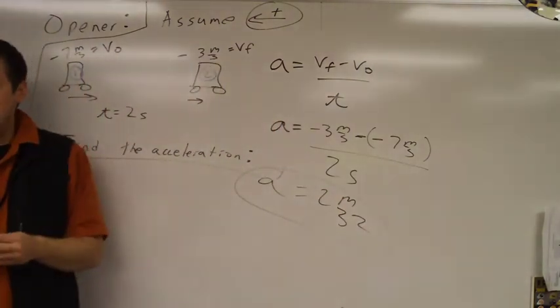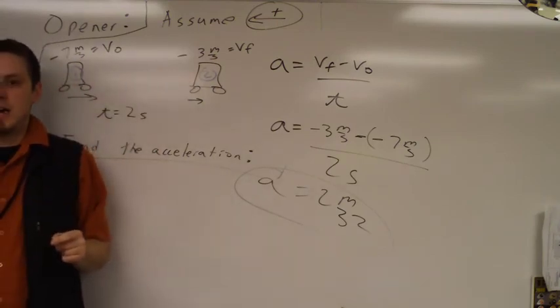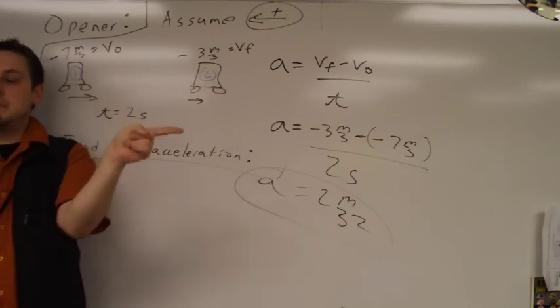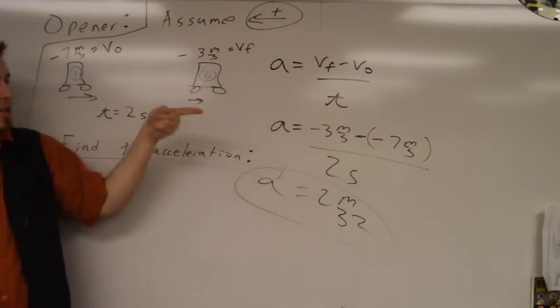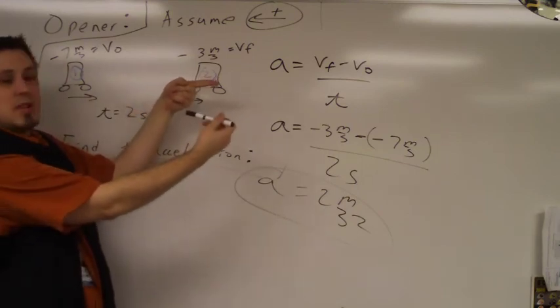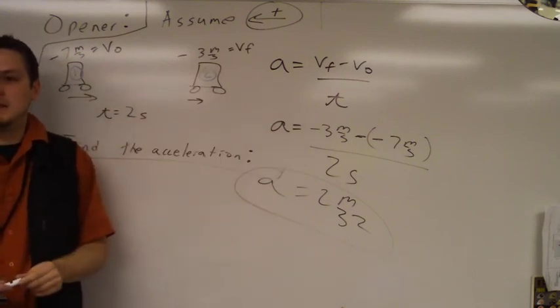Let's see if this makes sense. Which way was the velocity going? Not positive or negative, just direction. Which way is the velocity? To the right. Was it getting bigger or smaller in terms of size? Smaller. So if it's slowing down, the acceleration must point the opposite way, which is to the left, which in this case is positive. It makes sense.